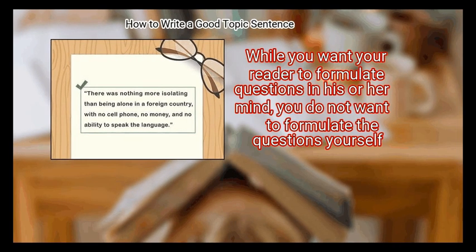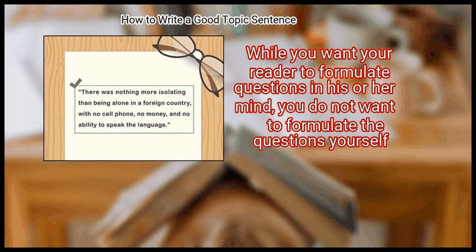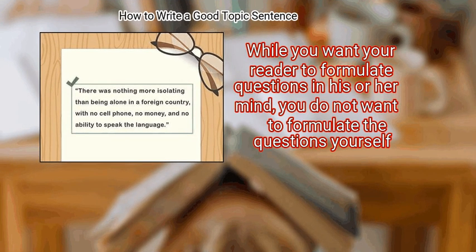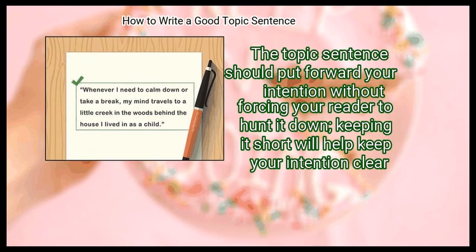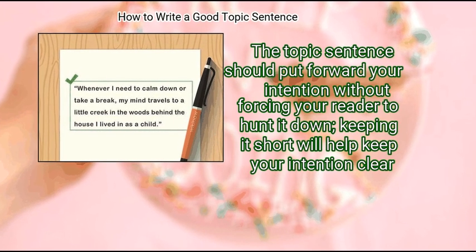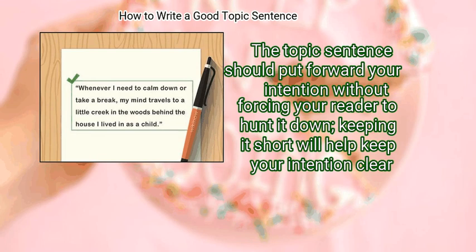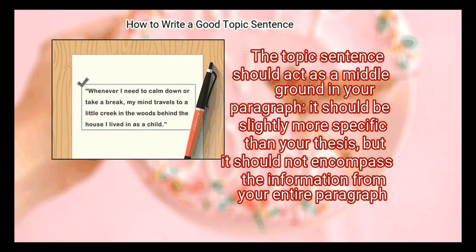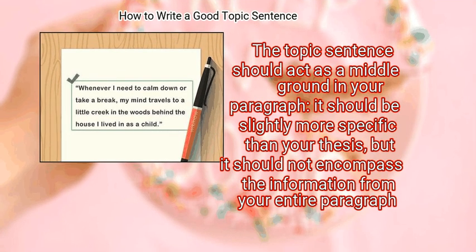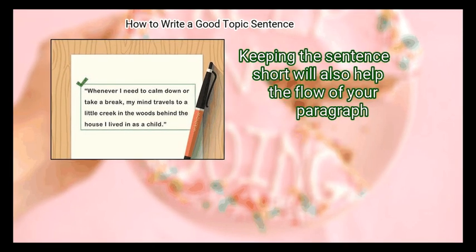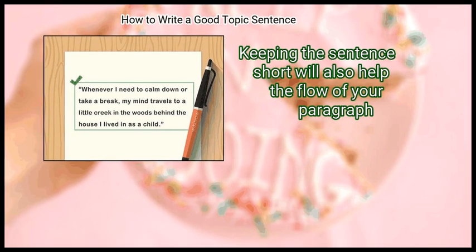Avoid rhetorical questions. While you want your reader to formulate questions in his or her mind, you do not want to formulate the questions yourself. Step 4: Keep it short and sweet. The topic sentence should put forward your intention without forcing your reader to hunt it down. Keeping it short will help keep your intention clear. The topic sentence should be slightly more specific than your thesis, but should not encompass all the information from your entire paragraph.